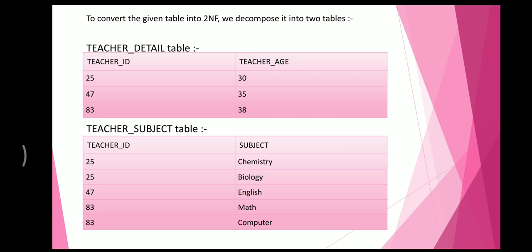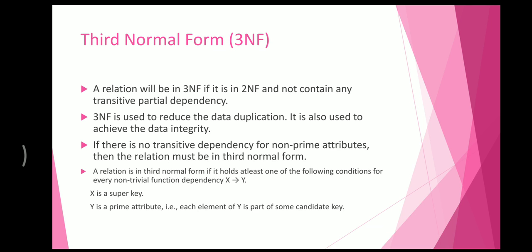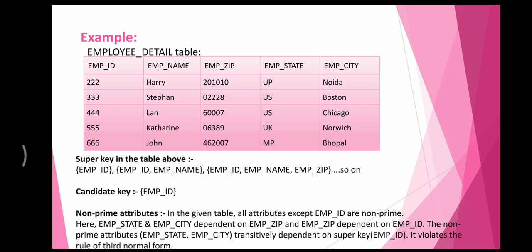Now we will see 3NF. A relation is in 3NF if it is in 2NF and there is no transitive dependency. 3NF is used to reduce data duplication and achieve data dependency. If there is no transitive dependency for non-prime attributes, the relation must be in Third Normal Form. A relation is in 3NF if, for every non-trivial functional dependency X → Y, X is a super key, or Y is a prime attribute (each element of Y is part of some candidate key). We will see 3NF through an example.